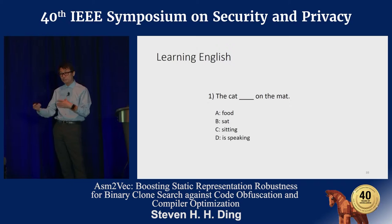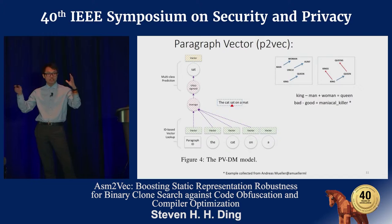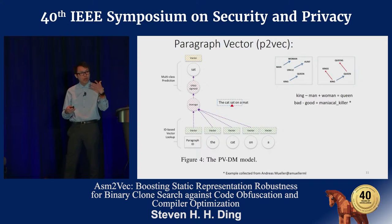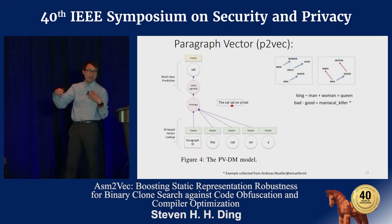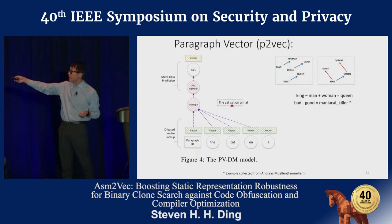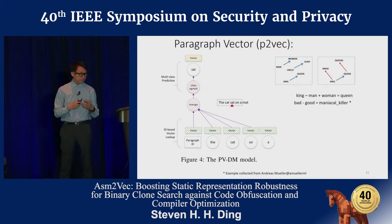Ten years later, people found out this is a fantastic way to train a neural network to learn human language. Given the neural network, we ask it to solve millions of these multiple-choice questions. For example, given a sequence of text - 'the cat sat on the mat' - we apply a sliding window and ask the neural network to predict what is in the middle, which is 'sat', given the surrounding context words 'the cat on the mat'.